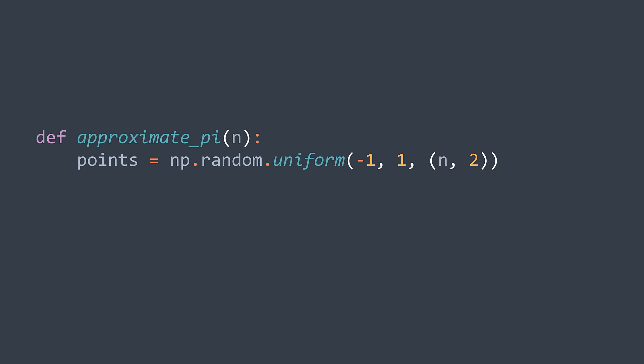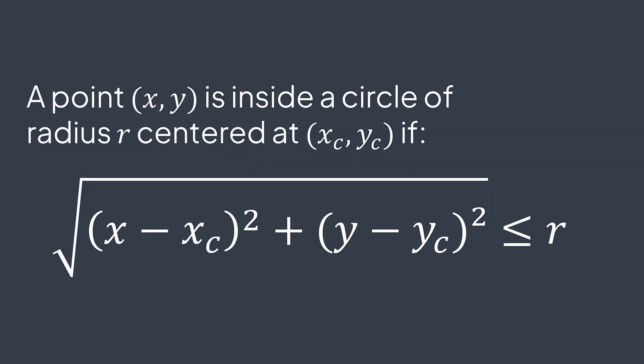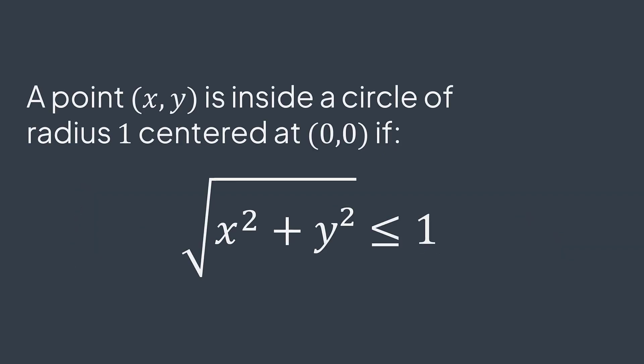Next step, count how many of them are inside the circle. In general, to know if a point x, y is inside a circle of radius r, centered at xc, yc, we just check if square root of x minus xc squared plus y minus yc squared is smaller or equal to one. And because a positive number whose square root is smaller than or equal to one is itself smaller than or equal to one, we can remove the square root.